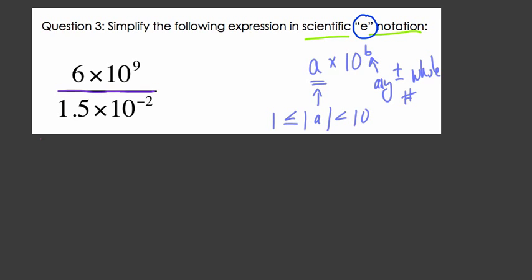Now we can manipulate this a little bit to cancel out. We can think of what is 6 divided by 1.5, and we can think what is 10 to the 9th divided by 10 to the negative 2nd. Because we're multiplying in both numerator and denominator, we can pull these values apart and divide them in pieces and still get the same answer.